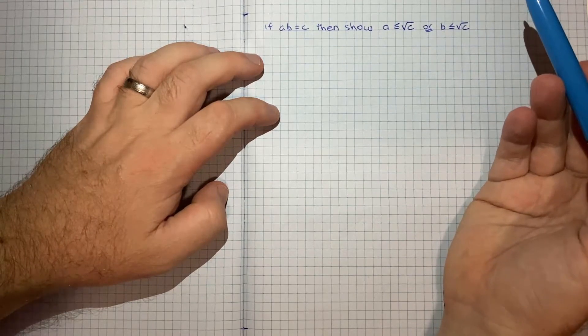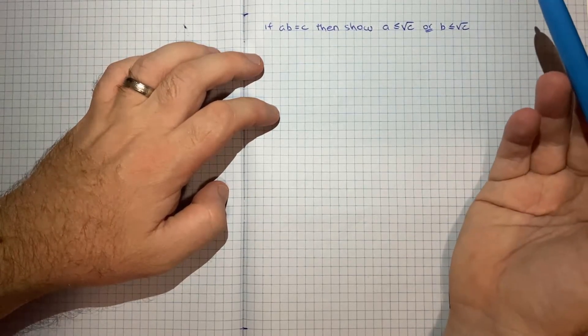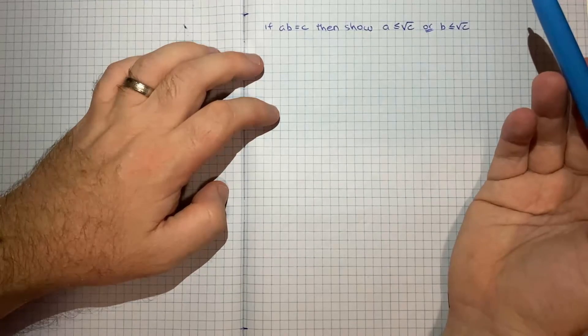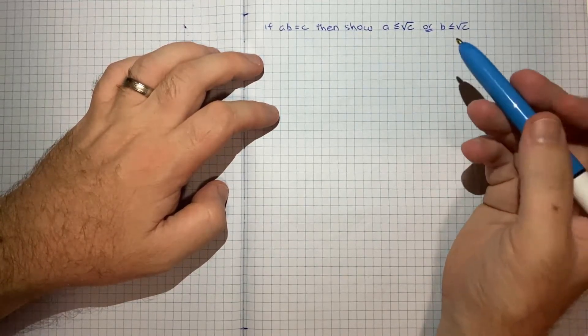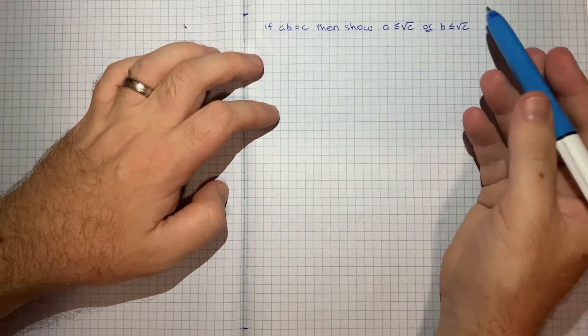I thought about maybe the triangle inequality, but again no luck on that front. And then I gave contradiction a try and it was proof by contradiction that got me to the proof that I needed.